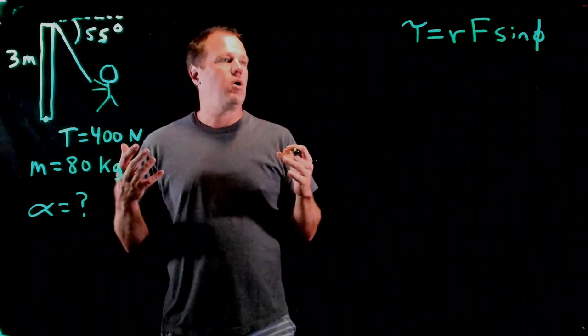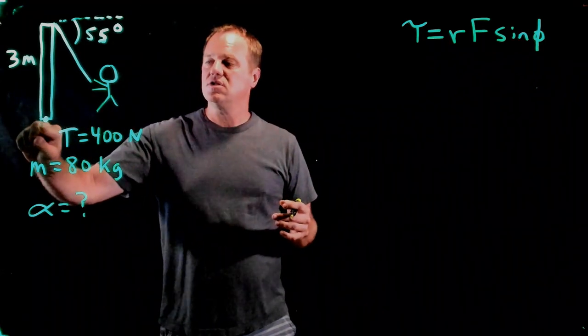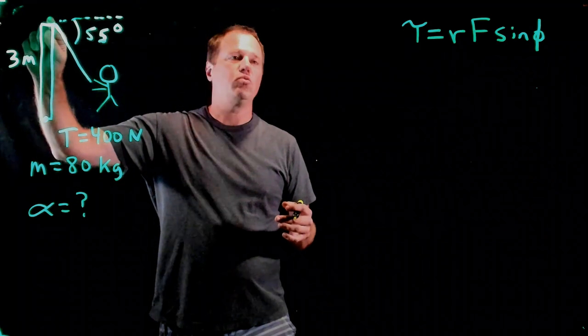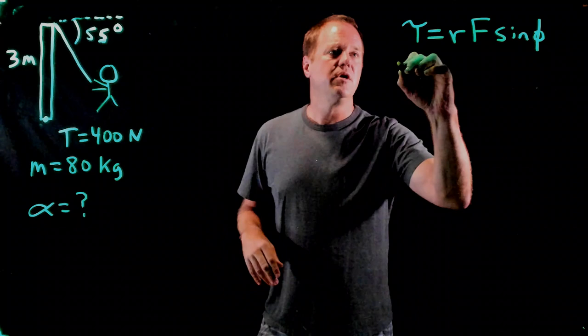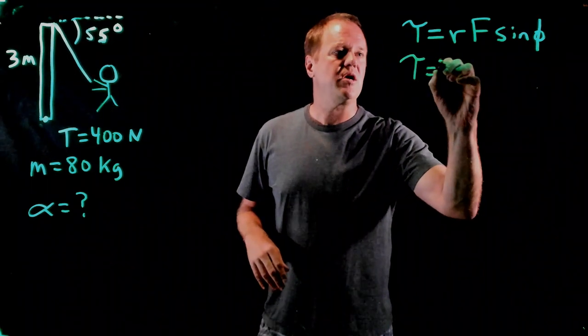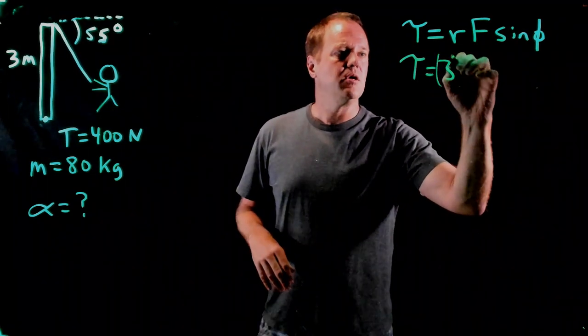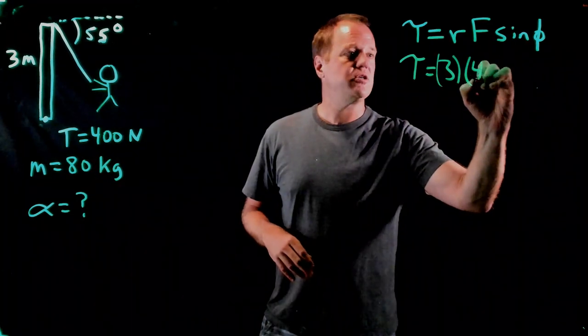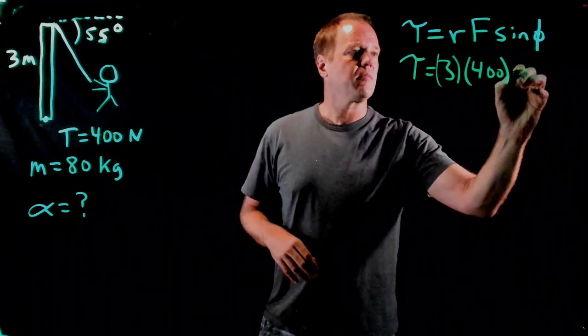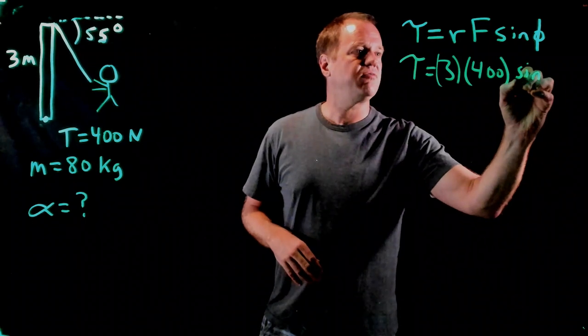So R is very easy. It's the distance from the axis of rotation to where the force is exerted. In this case, it's the full length of the pole. So I can just throw in 3 there. The force, in this case, is the tension force of 400 newtons. So I just throw that number in as well. And then I need to figure out this angle.